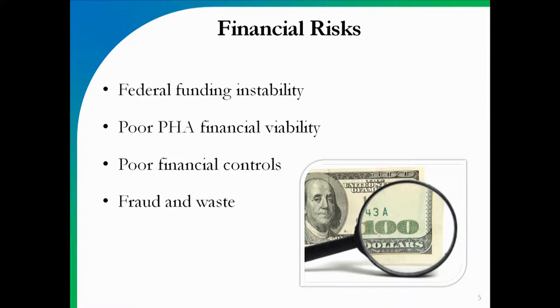The second type of risk is financial risk. We will spend a lot of time today talking about financials for two reasons. First, this is where we have the most amount of objective information — we get our financial data schedules, our FDSs. We have financial information; it may be a little bit behind, but we have a lot of it. The second, more important reason is that all of these risks are interrelated. Even if it's a management problem or a physical problem or a governance problem, it'll show up in the financial risk.